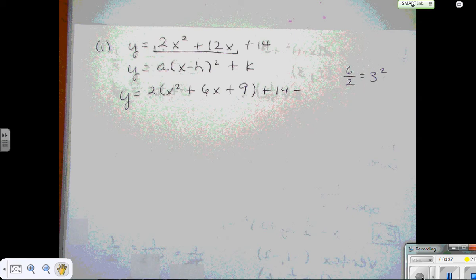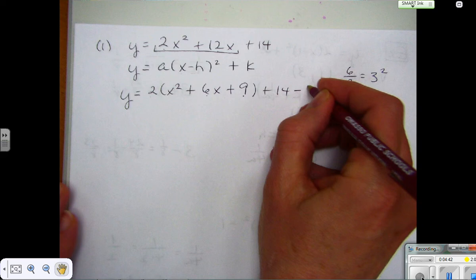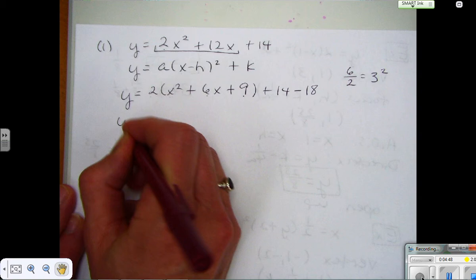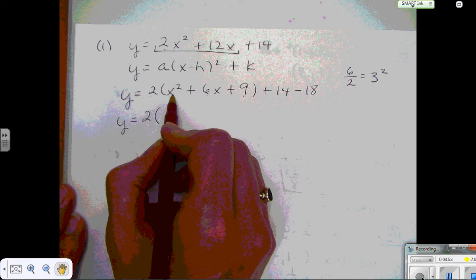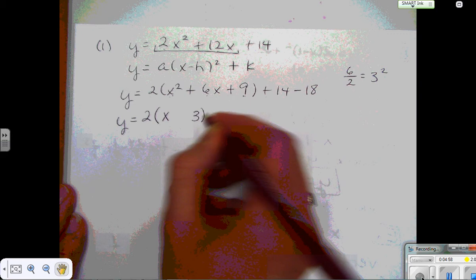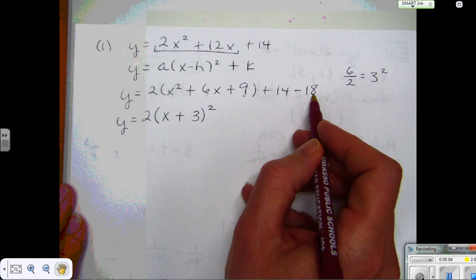Okay, so now I'm ready to factor this perfect trinomial square. And to remind you how to factor that, you're going to take the square root of your quadratic term, so that's just going to be x. Take the square root of your constant, so that's going to be 3. And then whatever your linear sign is, is what goes in the middle. And combine my like terms out here, that's minus 4.